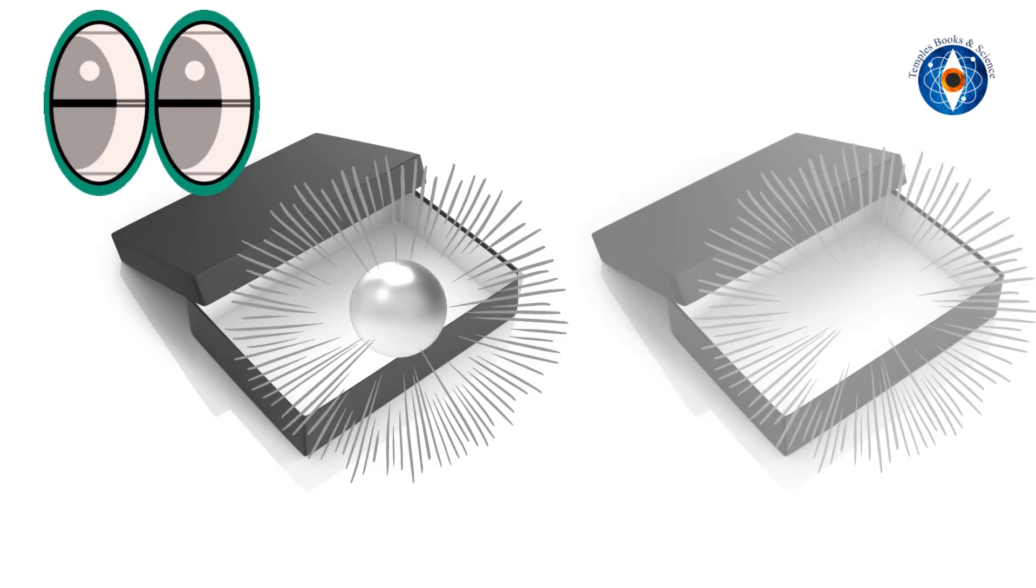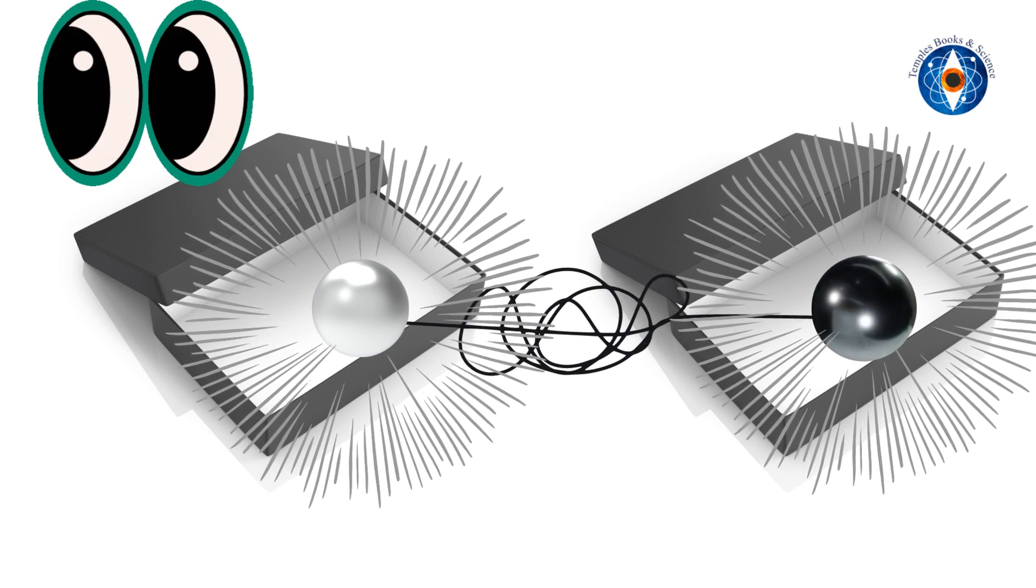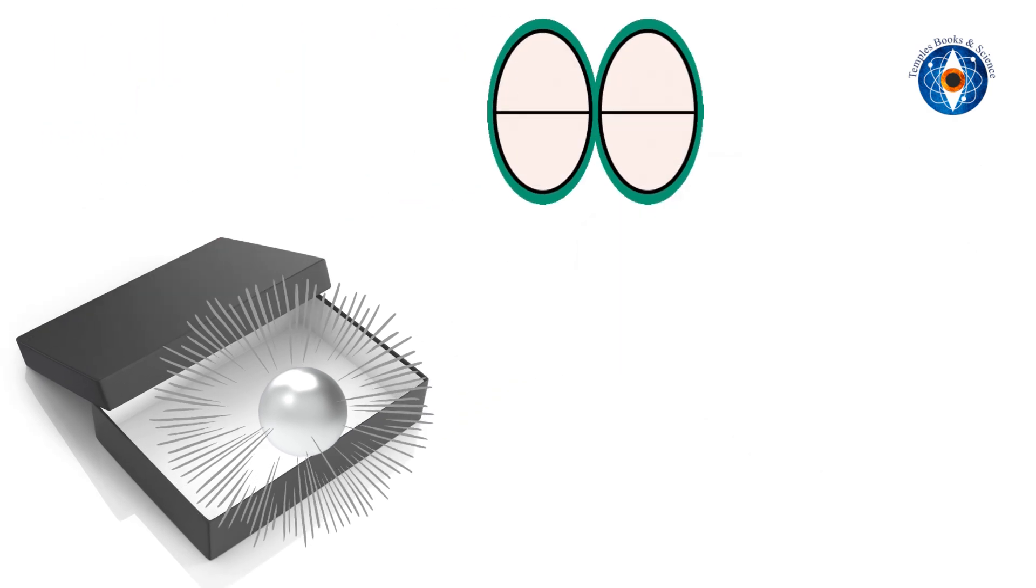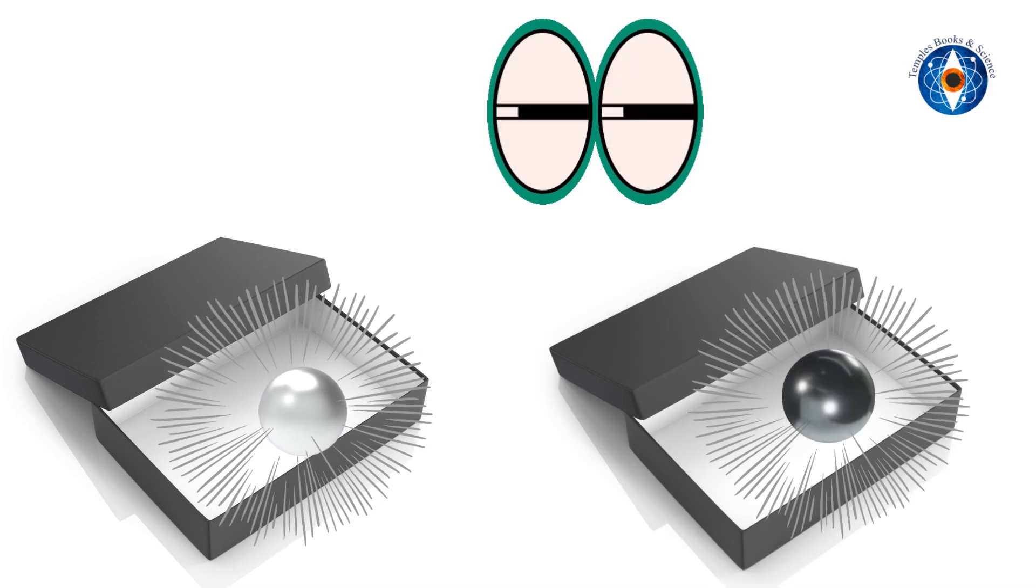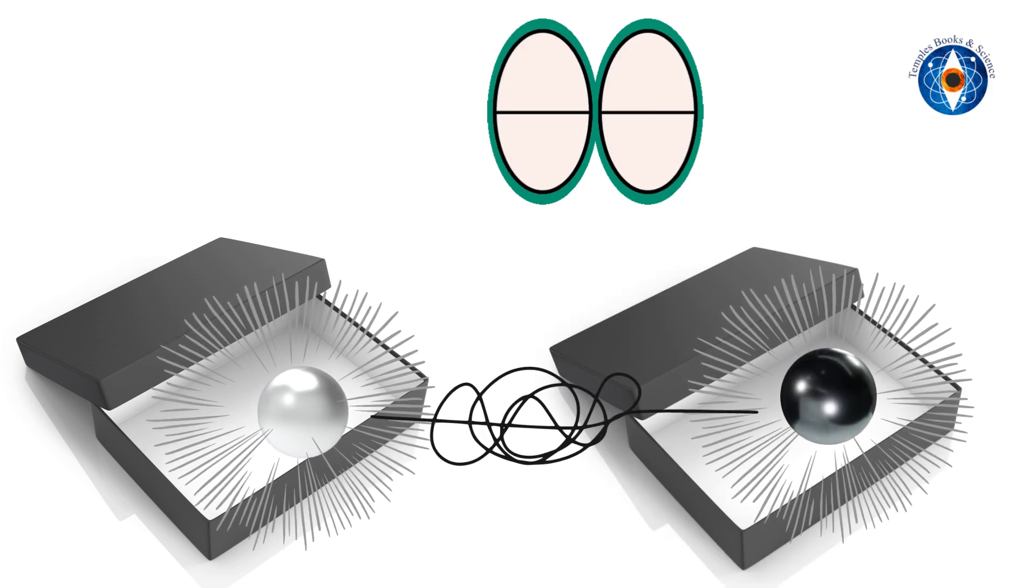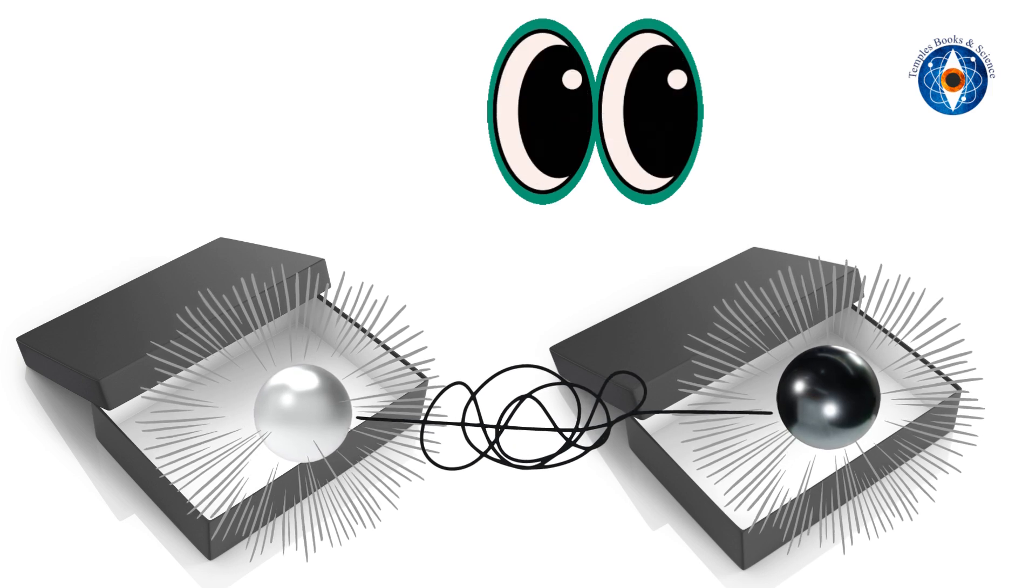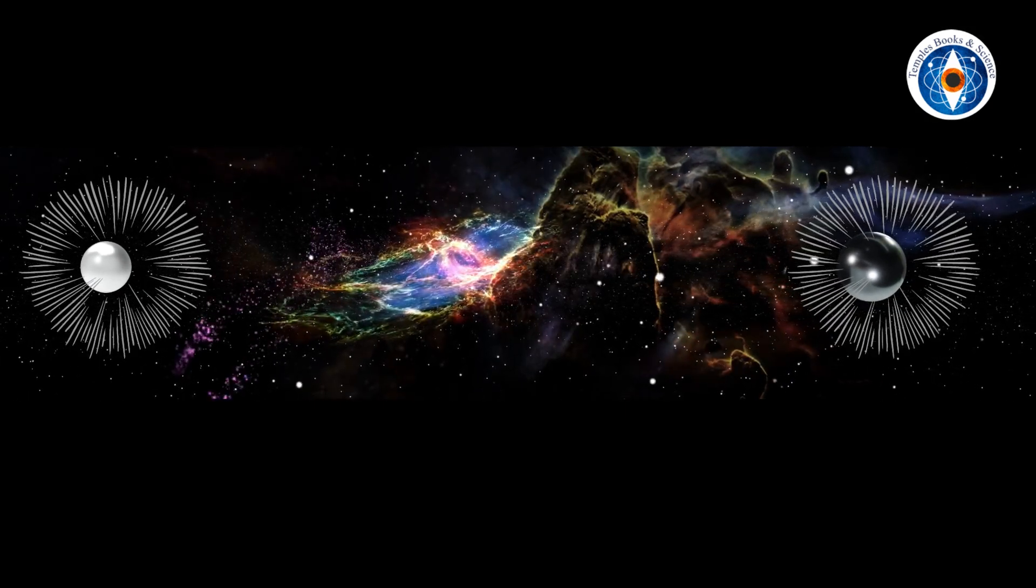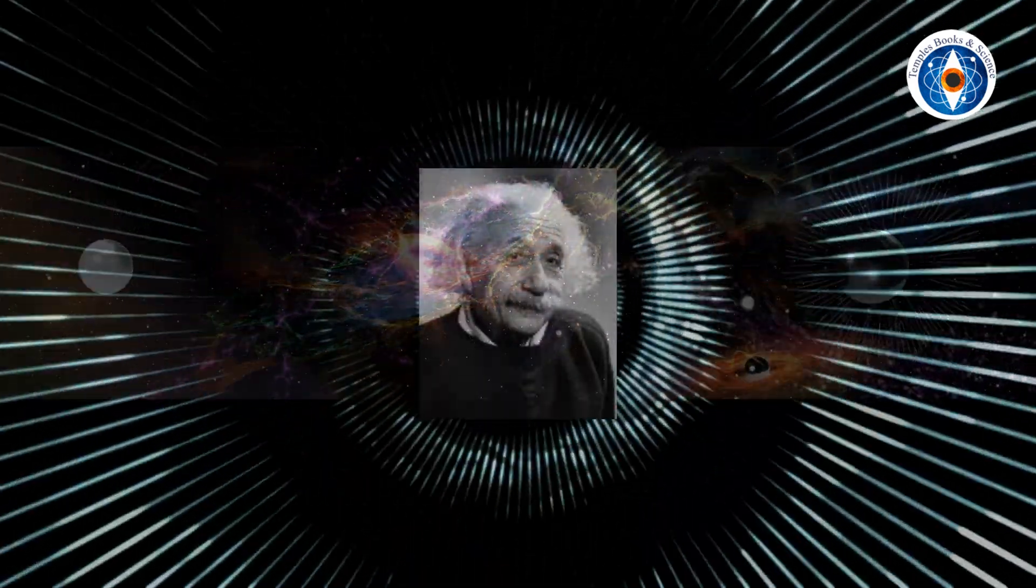Particles come into existence only when you open a box. When you open one box and let us say you see a white ball, at that exact instant the black ball appears in the second box. As soon as you observe one particle and bring it into existence, the other particle instantly appears, as if they were joined together by some invisible thread. This would happen instantly even if they are separated by millions of light years.